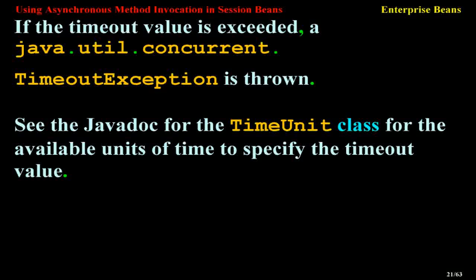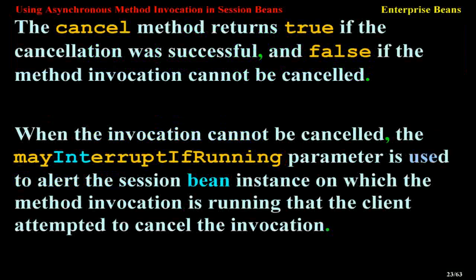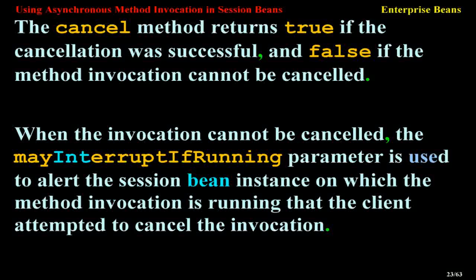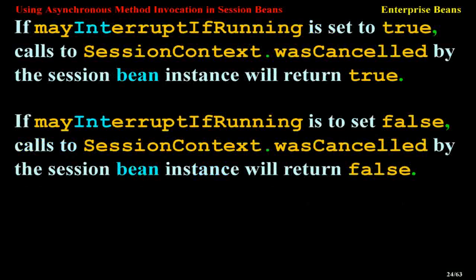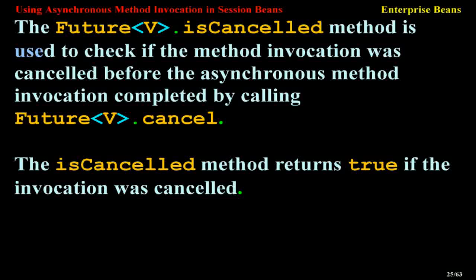To cancel an asynchronous method invocation, call the cancel(boolean mayInterruptIfRunning) method on the Future<V> instance. The cancel() method returns true if cancellation was successful, and false if the invocation cannot be cancelled. When cancellation cannot occur, the mayInterruptIfRunning parameter alerts the Session Bean instance. If mayInterruptIfRunning is true, calls to sessionContext.wasCancelled() will return true; if false, they will return false. The Future<V>.isCancelled() method is used to check if the invocation was cancelled before the asynchronous method completed.